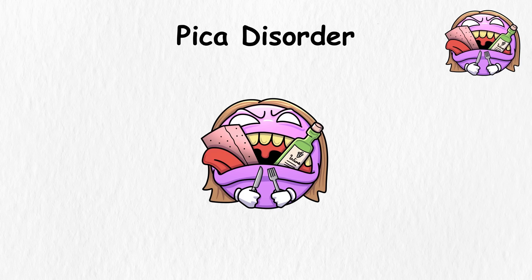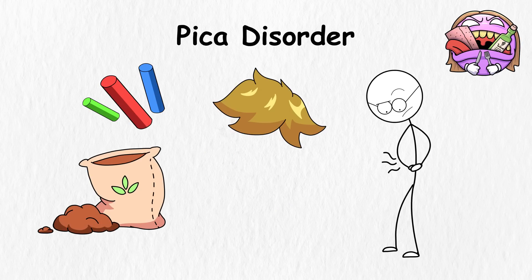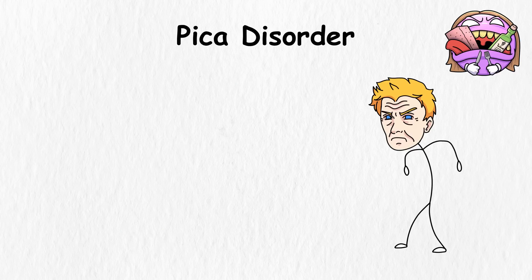Pica Disorder. Having pica disorder is like having the weirdest pre-period cravings ever. Instead of looking for pizza and cookies, you'll want a snack on dirt, chalk, hair, and nails. It's a culinary ride that's going to put you on Gordon Ramsay's bad side.